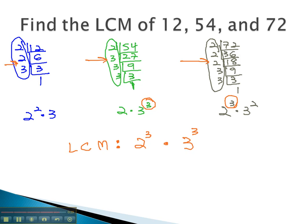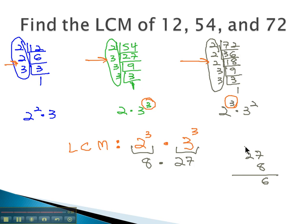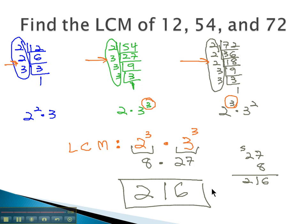The least common multiple, then, is whatever 2 cubed times 3 cubed is. 2 cubed is 8, 3 cubed is 27. Multiplying 8 times 27: 8 times 7 is 56, carry the 5, giving 216. So 216 is our least common multiple. We found that by finding the prime factorizations, identifying the highest exponents, then using all factors with those highest exponents.